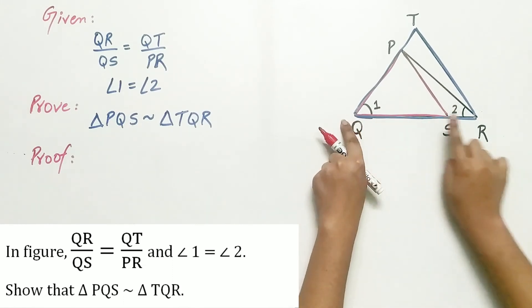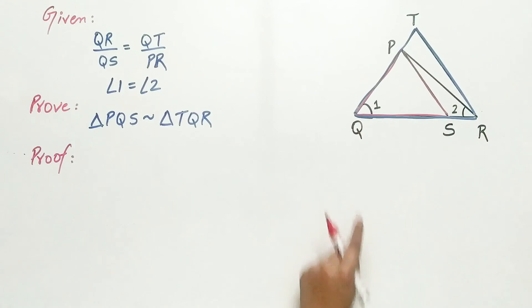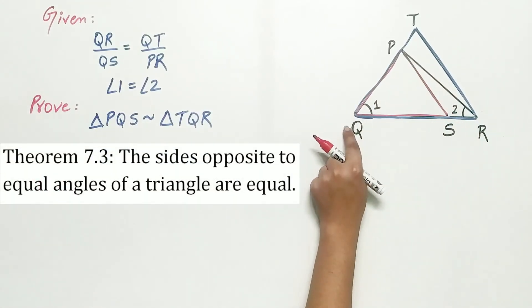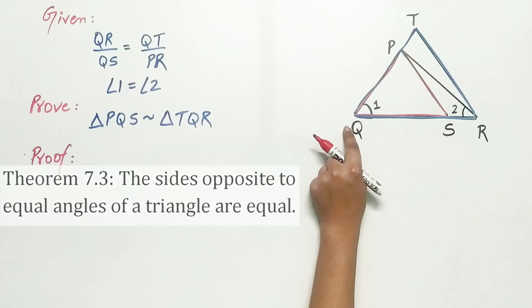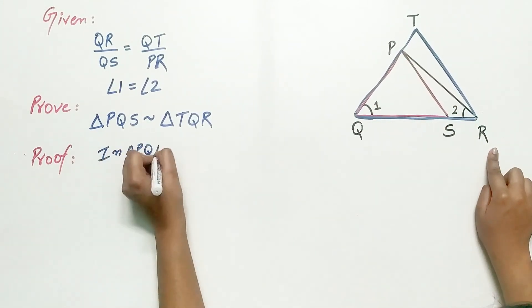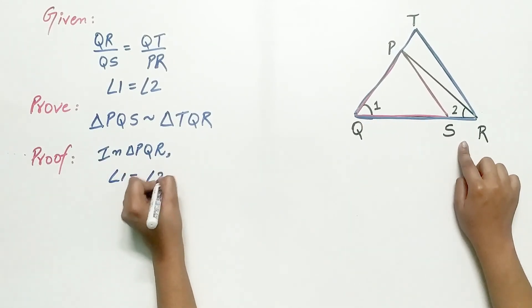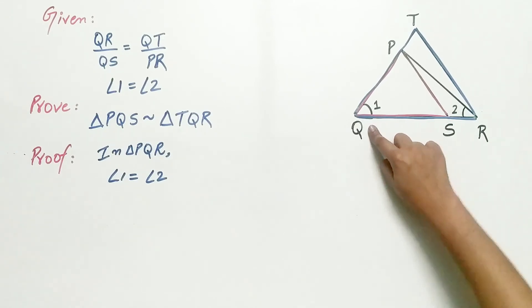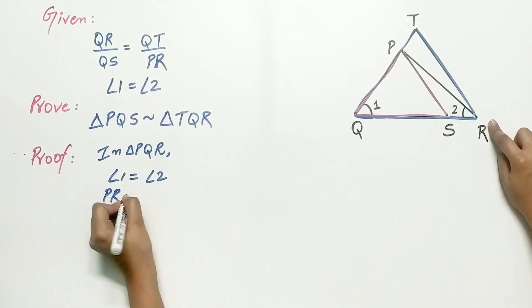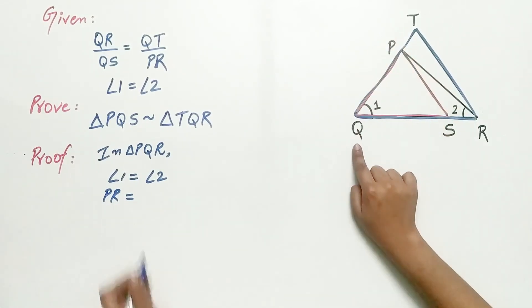Angle 1 is equal to angle 2 and remember the theorem sides opposite to equal angles of a triangle are equal. Now look, in triangle PQR, angle 1 is equal to angle 2. Hence, the side opposite to angle 1, that is PR, is equal to side opposite to angle 2, that is PQ.